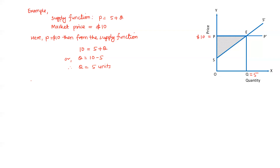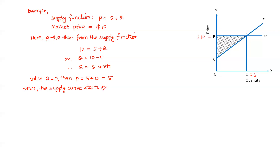When q equals 0, then from the supply function P equals 5 plus 0, which equals 5. Hence the supply curve starts from 5 on the vertical axis. So this value S is equal to 5.